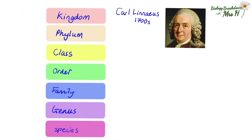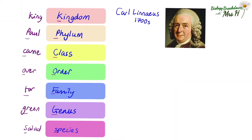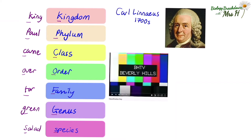You need to remember the order of these taxonomic groups and there are different ways to help you. You could take the first letter of each word and use a rhyme like 'King Paul came over for green salad.' My favourite way is to watch the terribly cheesy 1980s classification rap — just search for it on YouTube. Yes, it's dated and cringy, but it's classic 1980s and it really helps students remember the order. Once you've seen it, you can't unsee it.